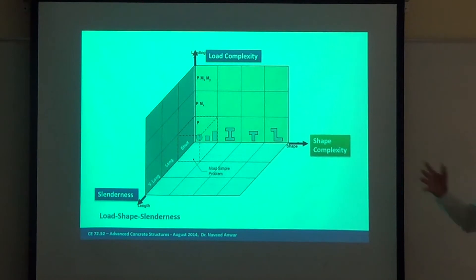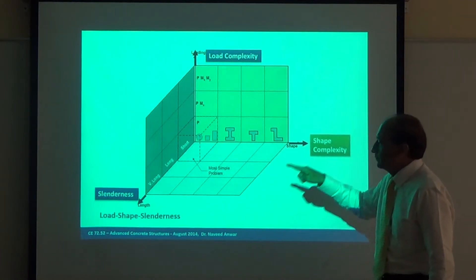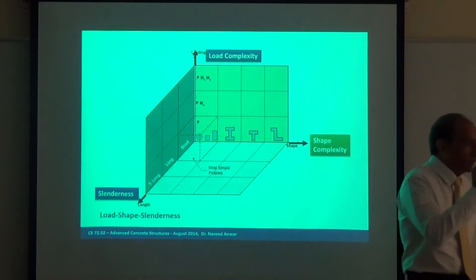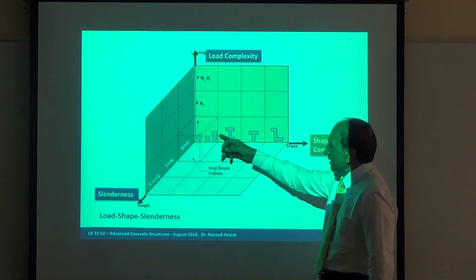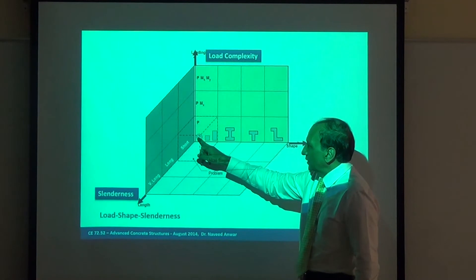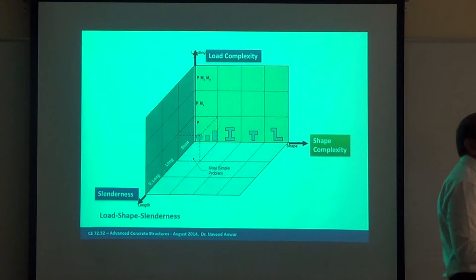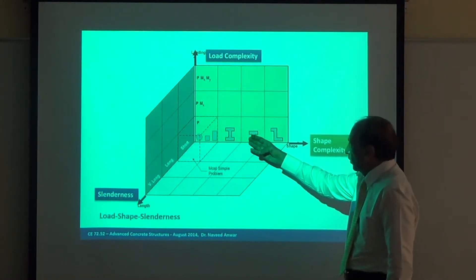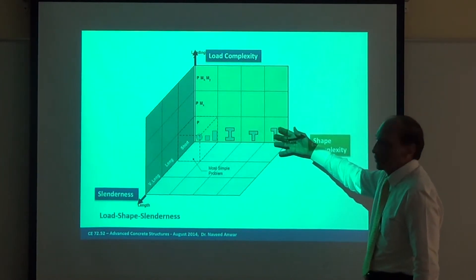This is a three-dimensional complexity space. The first complexity is load, shape, and slenderness complexity. On one axis you have cross-section shape — it could be circular, square, or rectangle, which is simple, or it could be an I-shape or become complex. The second axis is the length of the column: short column, long column, very long column. Length of the column makes it complicated.